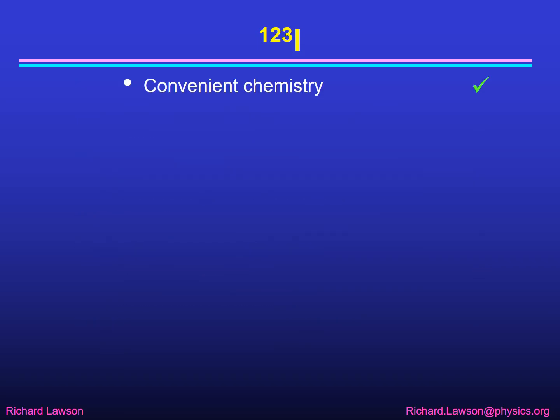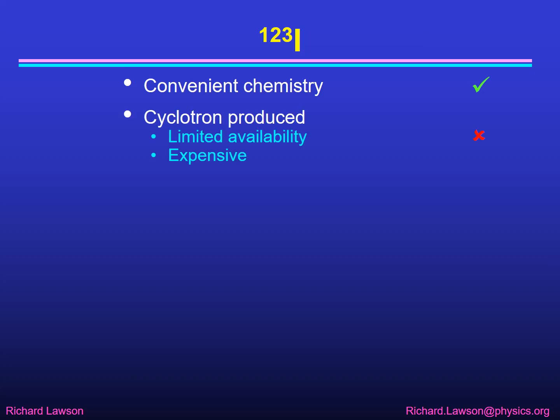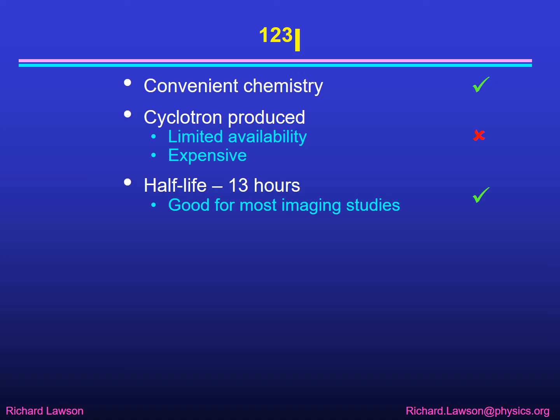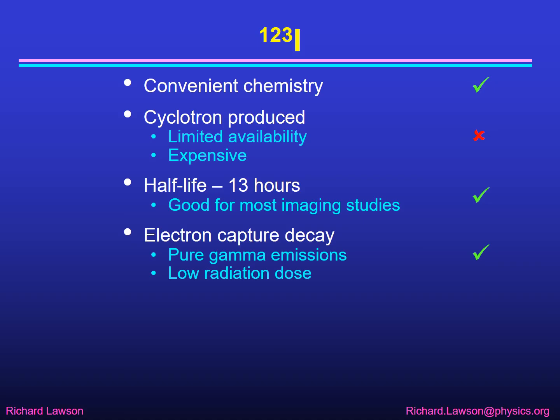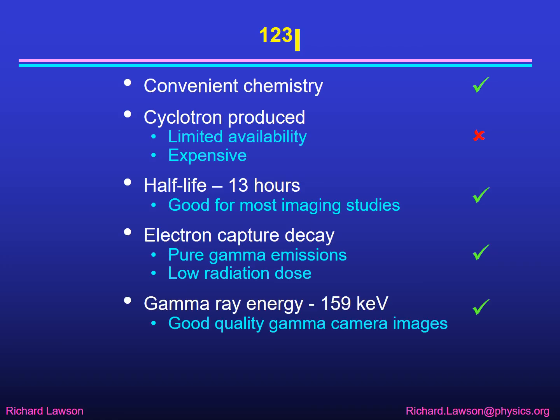Iodine-123 has the same convenient chemistry as iodine-131 but it's cyclotron produced, which limits its availability and makes it rather expensive. However the half-life of 13 hours is excellent — it's good for most imaging studies. Best of all it decays by electron capture decay which means it gives pure gamma emissions with no beta particles, and that results in a low radiation dose because most of the gamma rays will escape from the patient. The gamma ray energy at 159 keV is nicely within our ideal range of 100 to 200 keV, so it gives very good quality gamma camera images.